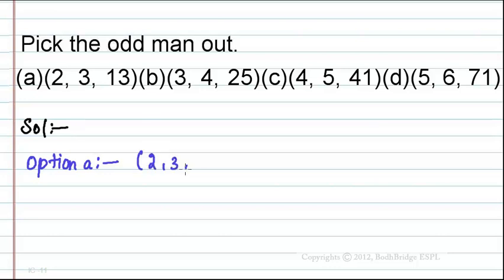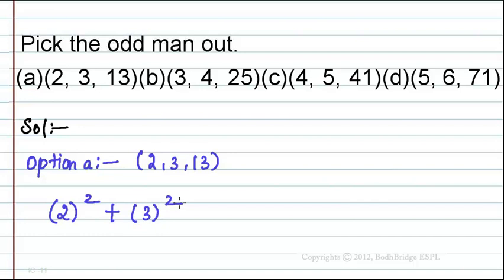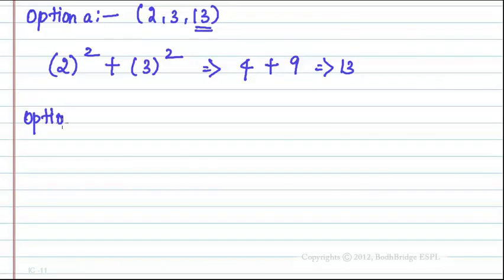Option A: 2, 3, 13. We can write the third term as 2 squared plus 3 squared. So 2 squared is 4, plus 3 squared is 9. 4 plus 9 equals 13 — that is the third term.